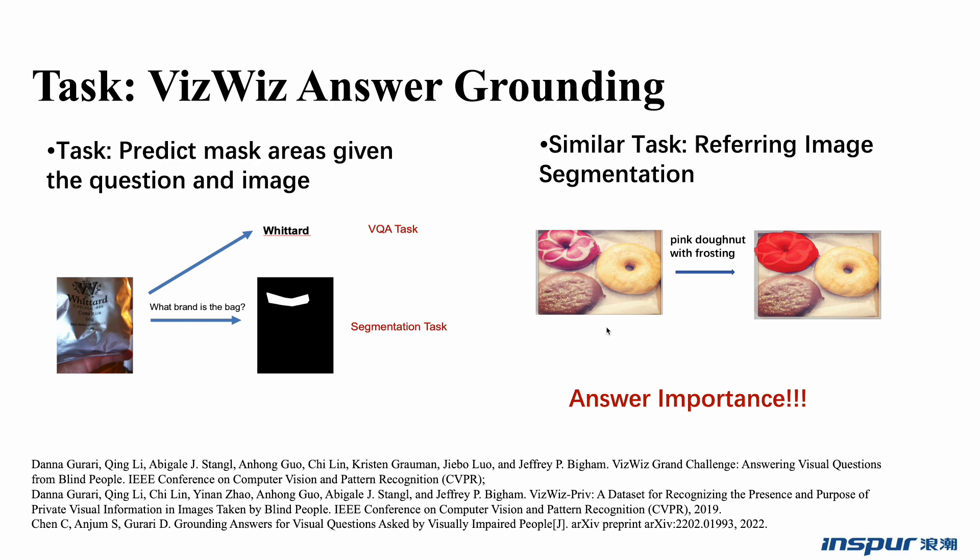There exists a similar task named Referring Image Segmentation. For common referring image segmentation, the text caption may just be 'the silver bag' and not care about the detailed information on the bag. The text caption in referring image segmentation has a direct link to the ground truth mask area, while there exists no direct link for VizWiz Answer Grounding. We focused on the answer importance because it may be the anchor connecting the question and the image, like the object tags in the OSCAR model.